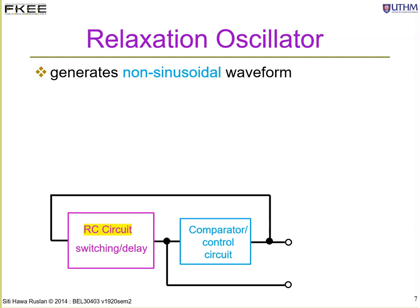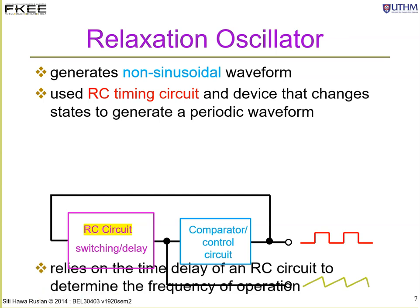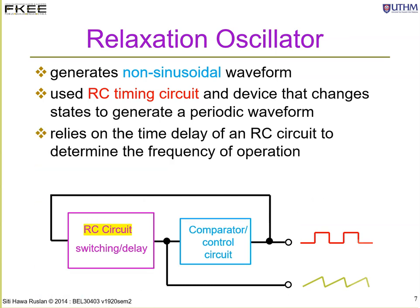For the relaxation oscillator, it uses an RC circuit with switching that controls the circuit. The waveform produced is a square wave or triangular wave, and the RC timing circuit is very important in generating the periodic waveform.